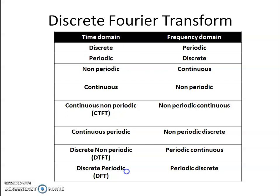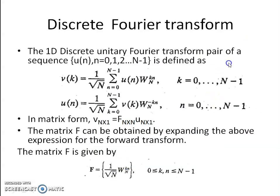We don't say actual conversion, but we assume that the signal in time domain is periodic in nature. Even though it is non-periodic, we assume that it is periodic with period capital N and it is repeating itself after every N samples. This is the fundamental assumption in discrete Fourier transform. We have a non-periodic signal, we assume it is periodic and repeating after every N samples, and then compute its DFT to obtain its spectrum.